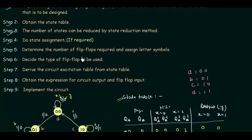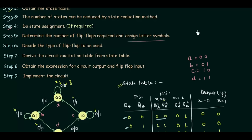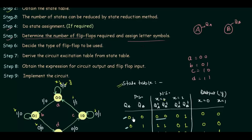Step number five: determine the number of flip-flops required and assign letter symbols. There are four states, and four states can be implemented using two flip-flops. I will give the flip-flops letter names: flip-flop one is A and flip-flop two is B. QA is the output of the A flip-flop and QB is the output of the B flip-flop. Step number five is done — we are using two flip-flops with letter symbols A and B already assigned in our state table.